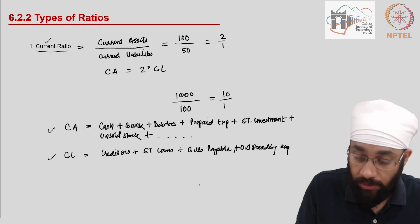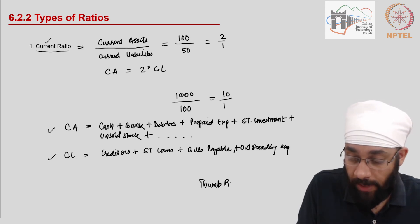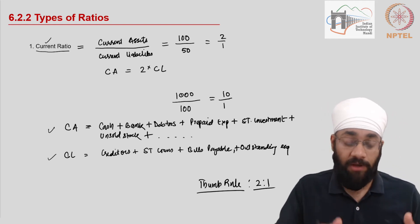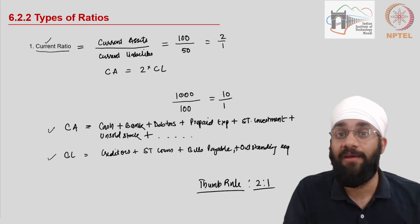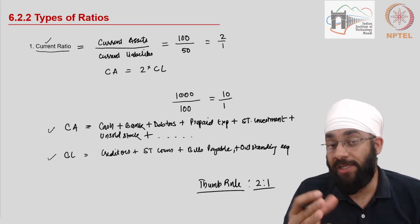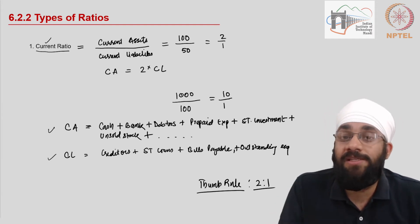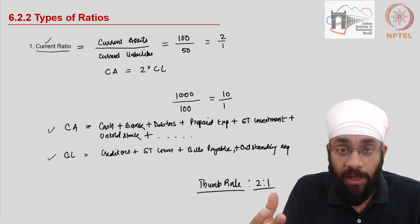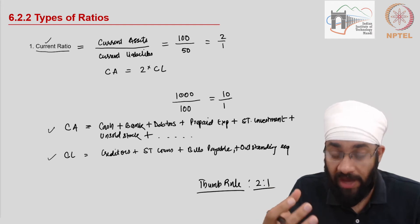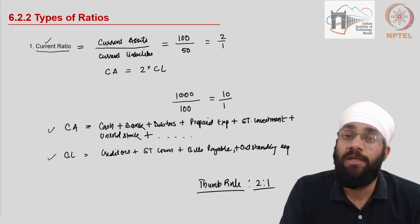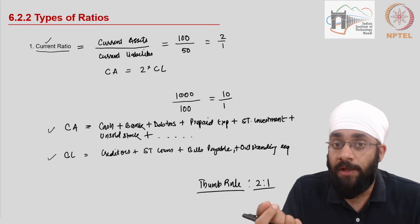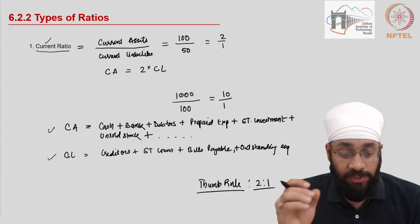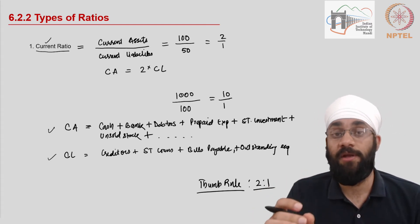There is a theoretical thumb rule: 2:1 is considered the ideal current ratio. However, that's what you read in textbooks — it varies according to the industry. Whether you're in manufacturing, renewable energy, or healthcare, you look at what other players in the market are maintaining and compare to that. This is the first ratio that helps us understand the short-term financial position of the business.